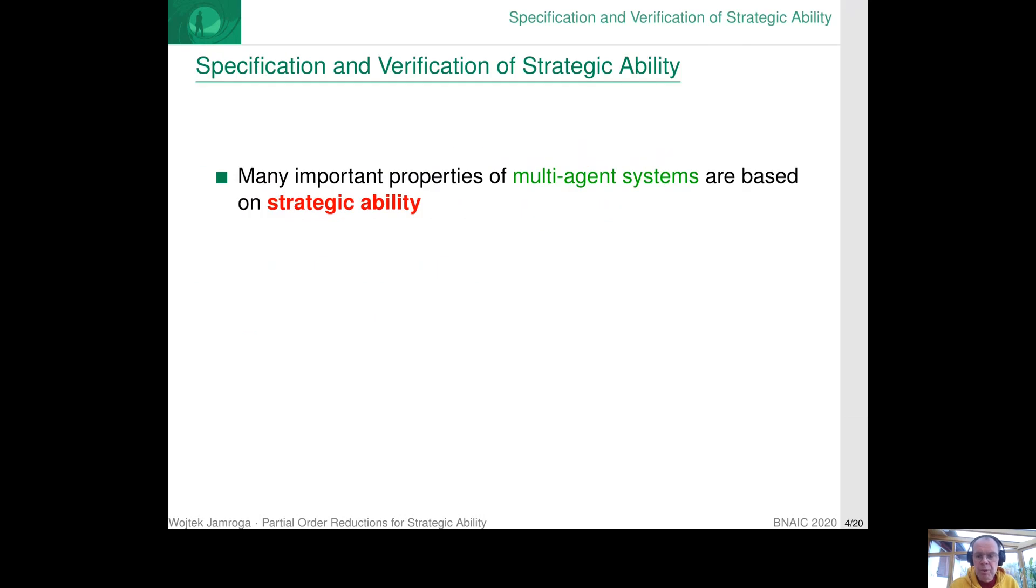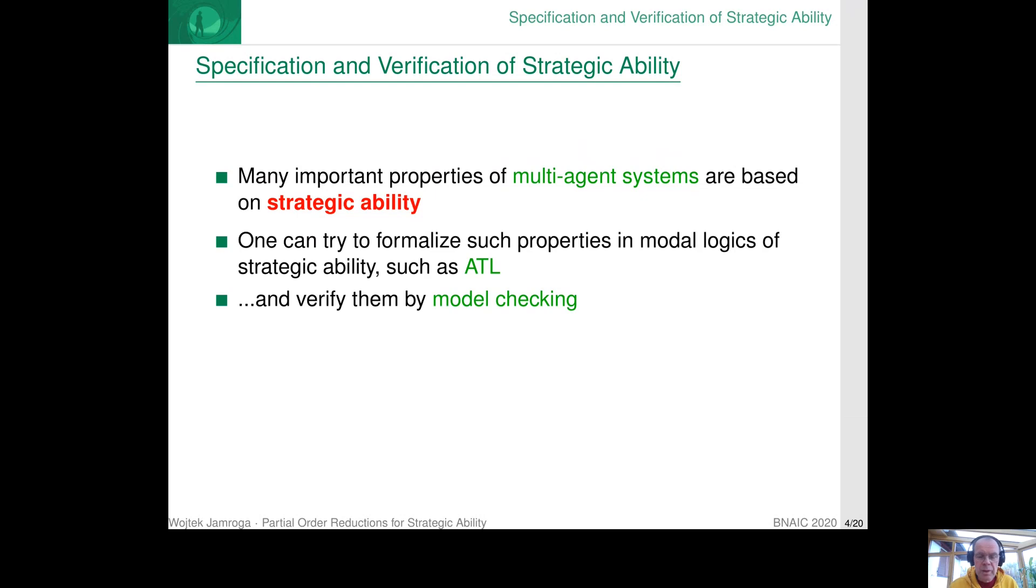Many important properties of multi-agent systems are based on the ability or inability of particular players to achieve particular goals. The good news is that there are some nice formal languages to specify such properties, in particular the modal logic ATL. And there are also some algorithms to do formal verification by model checking.